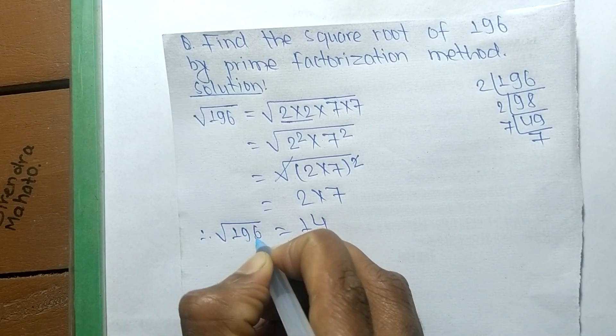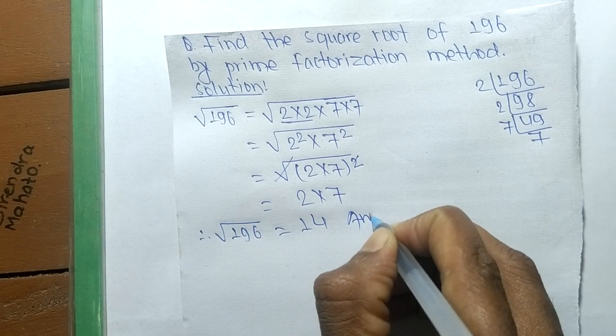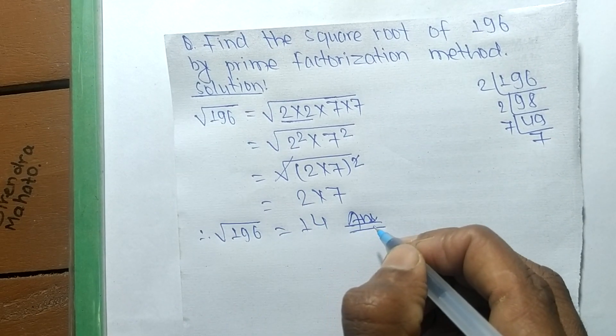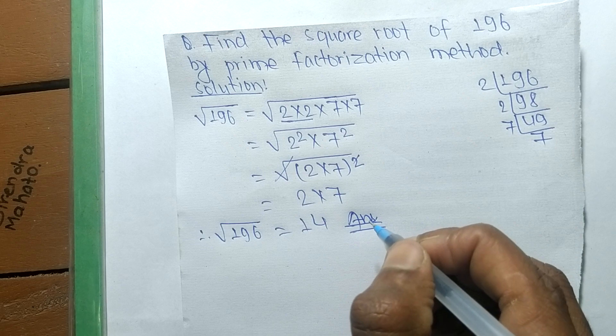Therefore, the square root of 196 is equal to 14. So this much for today and thanks for watching.